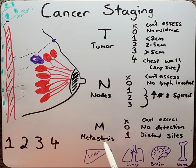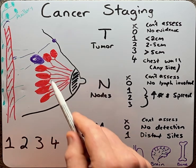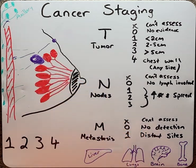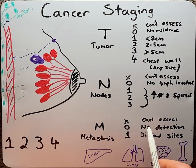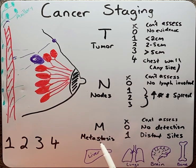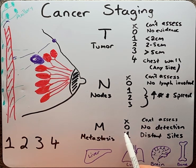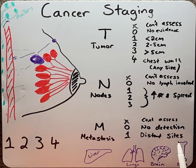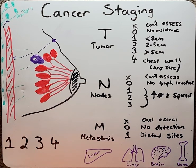Finally, the M, or metastasis, refers to whether the tumour has spread to secondary sites in the body. MX refers to the doctor cannot assess for metastasis. M0 means there's no evidence for metastasis. And M1 is there is evidence for a distant site spread to a secondary site, such as liver, lung, brain and bone.